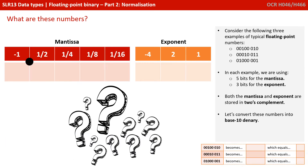Consider the following three examples of typical floating-point numbers written on the screen. In each example, we're going to use five bits for the mantissa and three for the exponent. Both the mantissa and the exponent are stored in two's complement. Let's convert these numbers into base-10 denary.